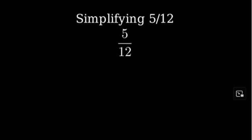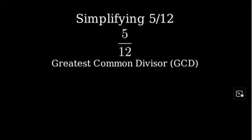To simplify a fraction, we need to find the greatest common divisor of the numerator and denominator. The greatest common divisor, or GCD, is the largest number that divides evenly into both numbers. Let's find all the factors of both numbers to determine their GCD.